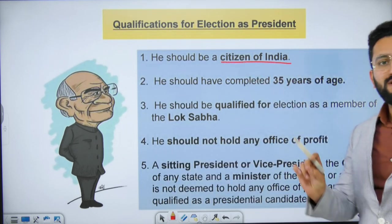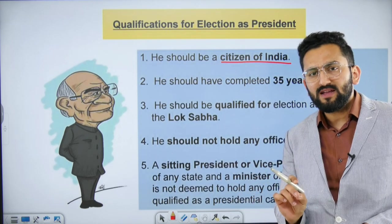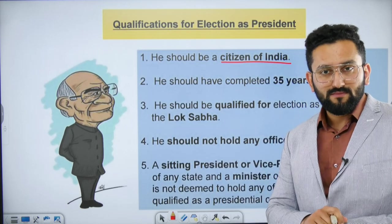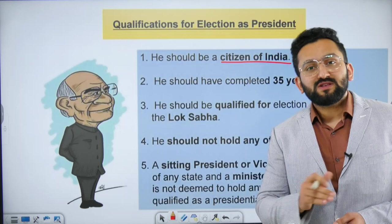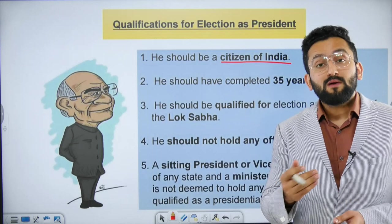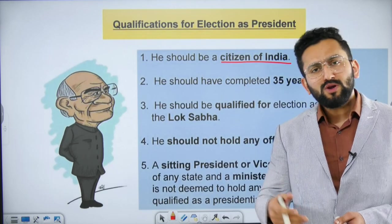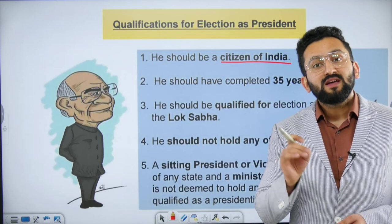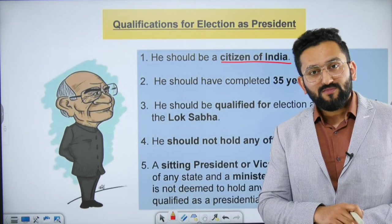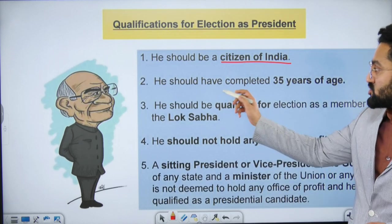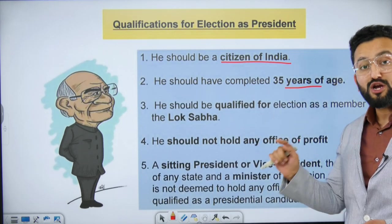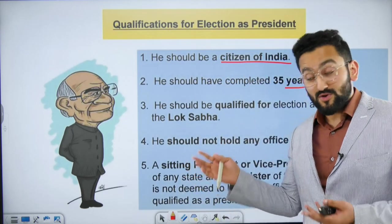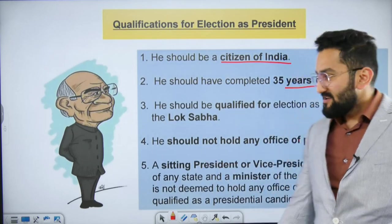The first qualification is citizen of India — it does not say citizen by birth, unlike the US President qualification where the person must be a citizen by birth. For example, Hollywood actor Arnold Schwarzenegger became Governor of California but could not run for US President because he was born outside the US, in Austria near the Italian peninsula. The minimum age is 35 years; there is no maximum age.